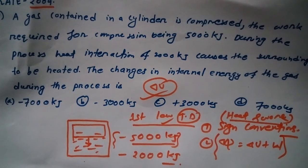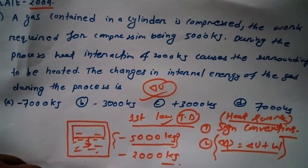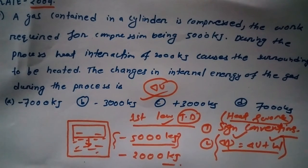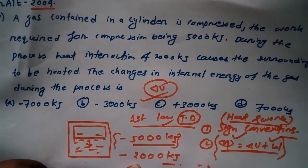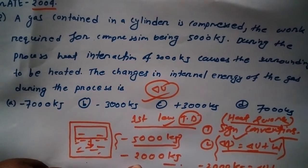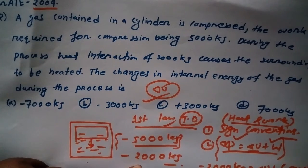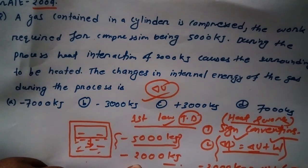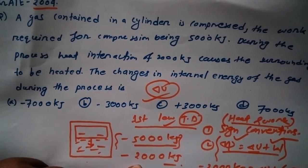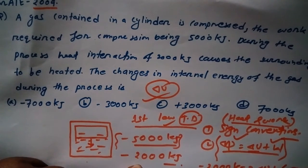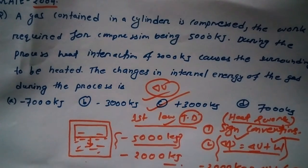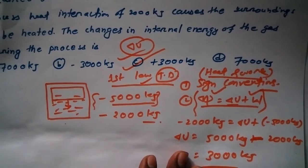We have to find out the change in internal energy, that is delta U. It is simple — we have the equation and two given values: Q and W. So Q is two thousand kilojoules and W is five thousand kilojoules. Transferring terms, delta U equals five thousand minus two thousand kilojoules, which gives three thousand kilojoules. So the answer is C.